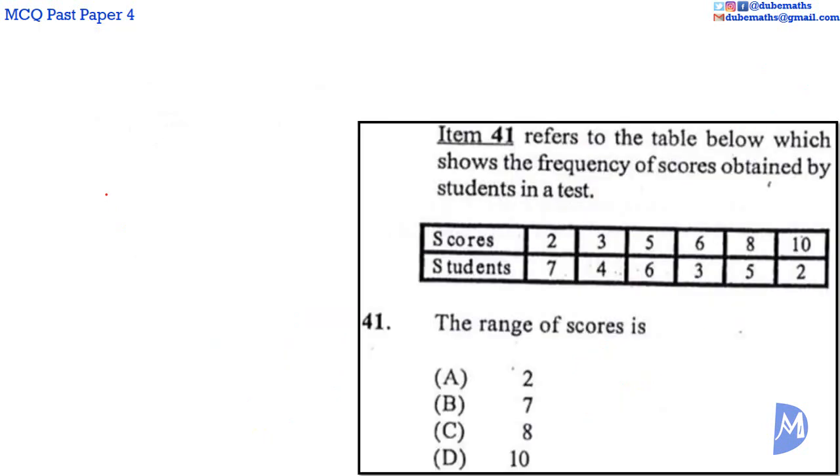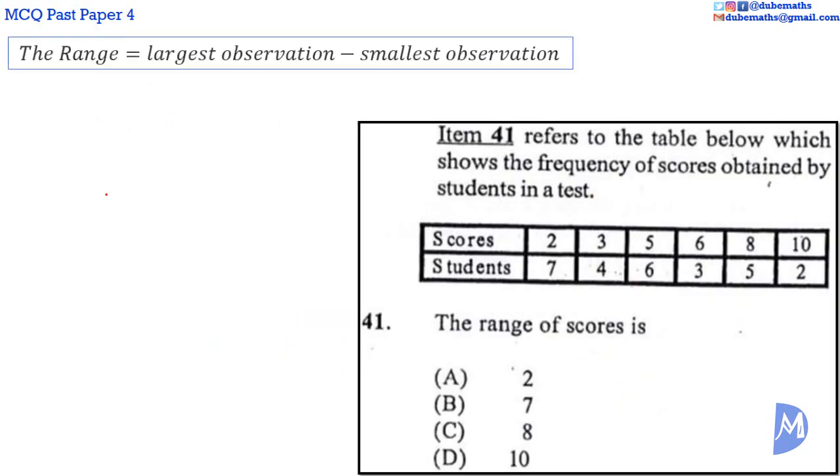Question 41. The range is the difference between the largest and the smallest observation. The largest score is 10.